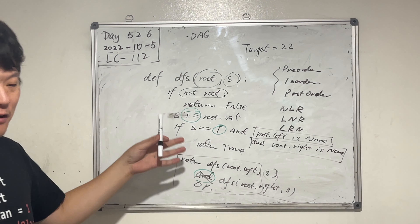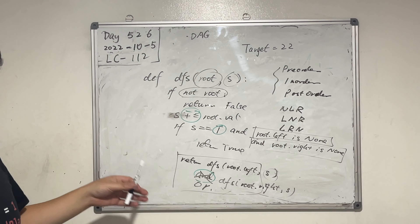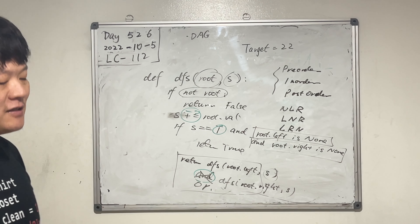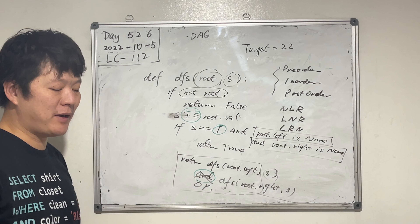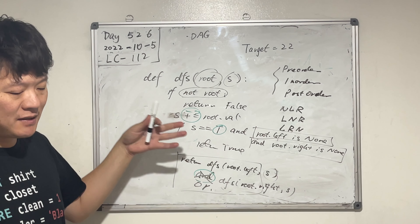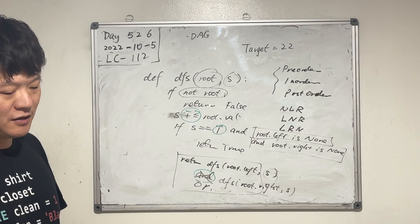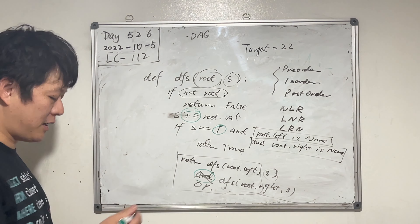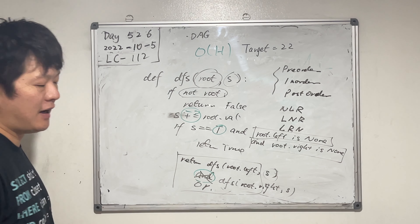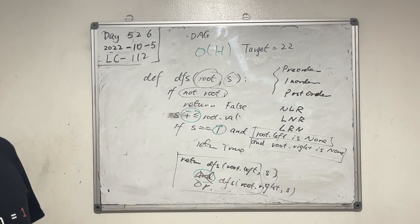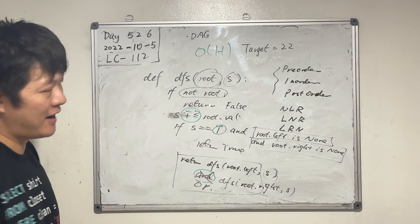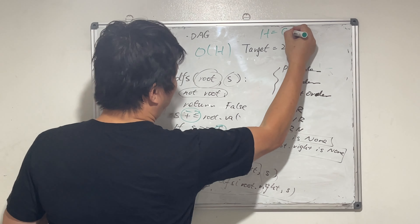For depth-first search, each node is visited only once, so the time complexity is O(n) where n is the number of nodes in the binary tree. The space complexity — we're using recursion as implicit stack usage — the complexity is O(h) where h is the height of the tree. In the worst case h equals n, in the best case h equals log n.